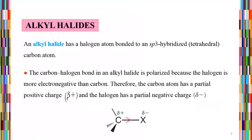An alkyl halide has a halogen atom bonded to an sp3 hybridized, meaning tetrahedral, carbon atom. The carbon-halogen bond in an alkyl halide is polarized because the halogen is more electronegative than the carbon. Therefore the carbon atom has a partial positive charge and the halogen has a partial negative charge.